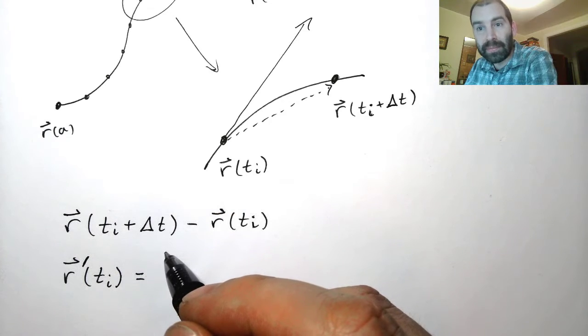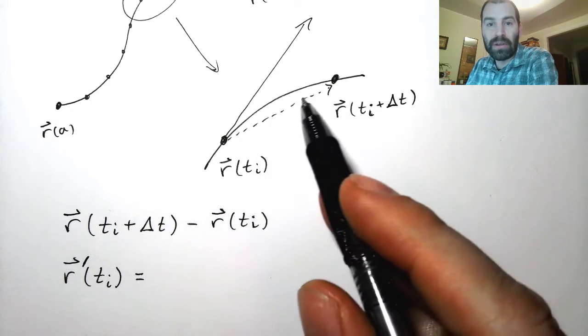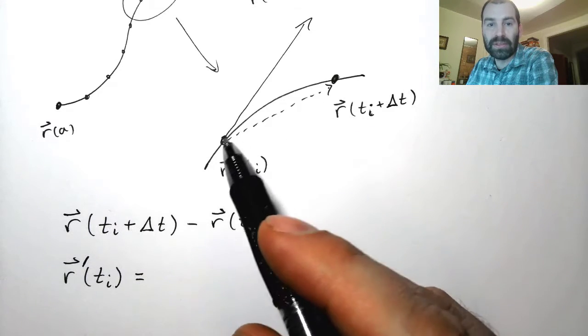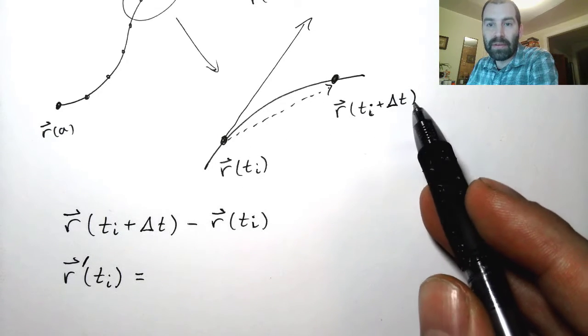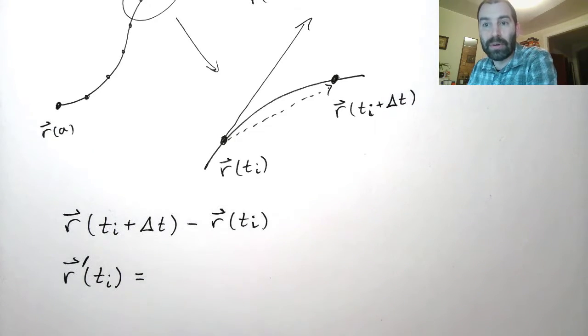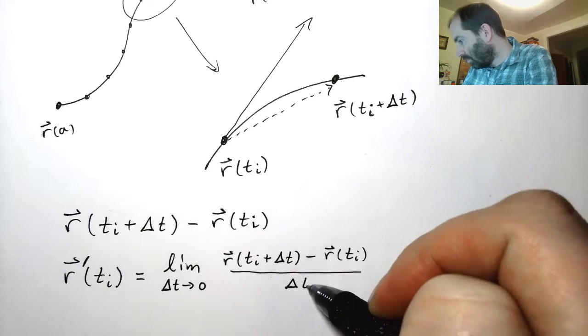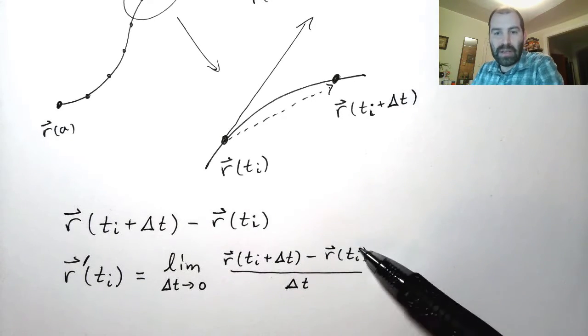Well it's defined in terms of a limit. It's the limit of the ratio of the difference between these two points and the difference between the t value of these two points. That's how a derivative is defined.